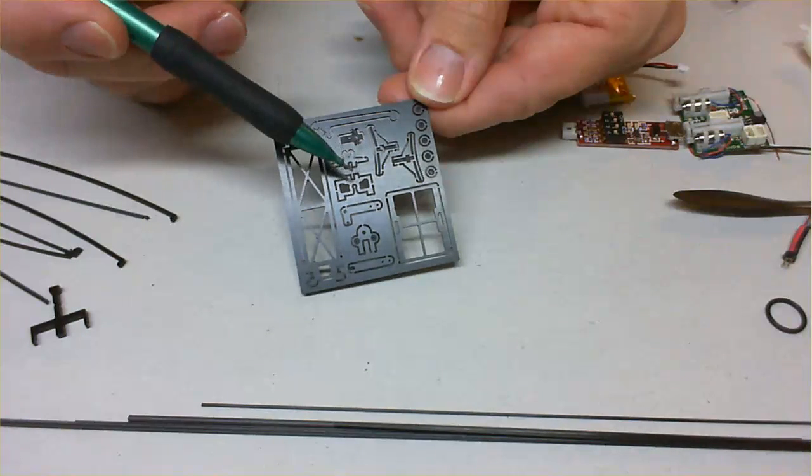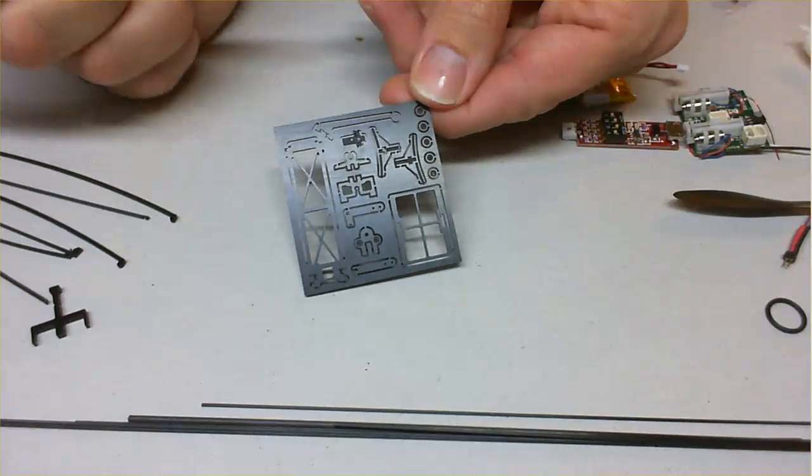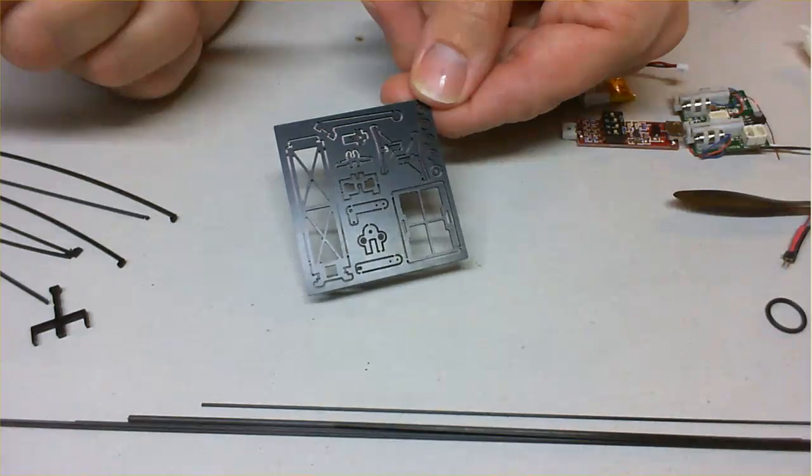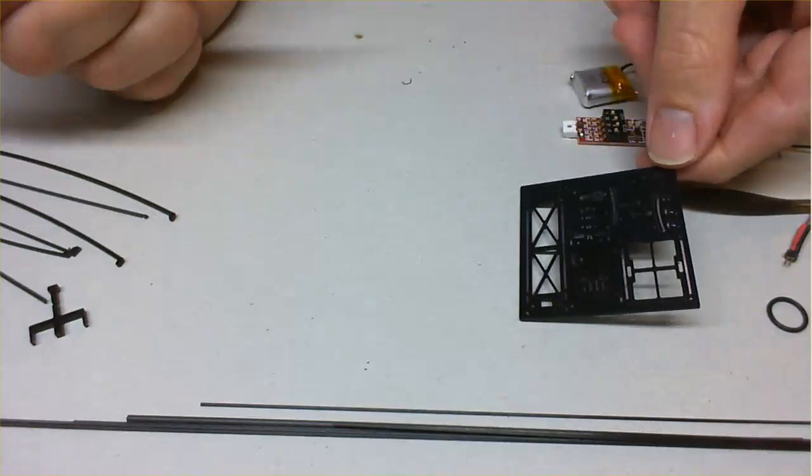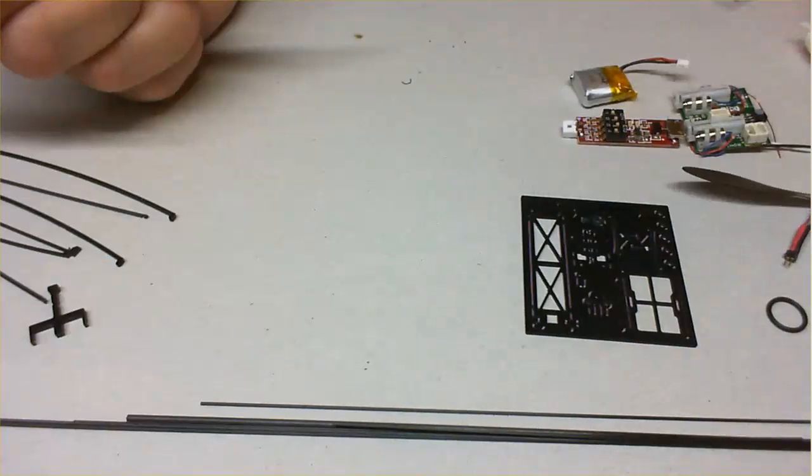And you just pop them out, just cut them out with a hobby knife. And use them as you're doing the construction. Okay, so that's the parts.